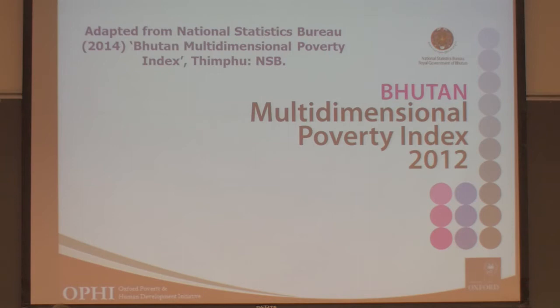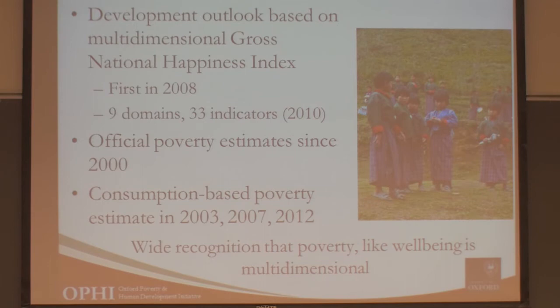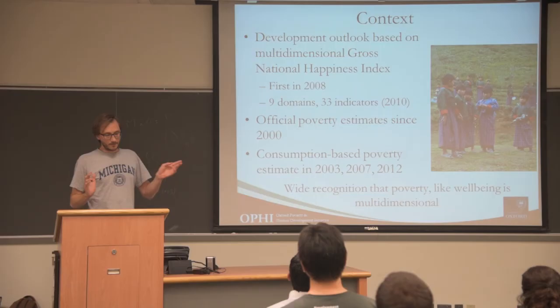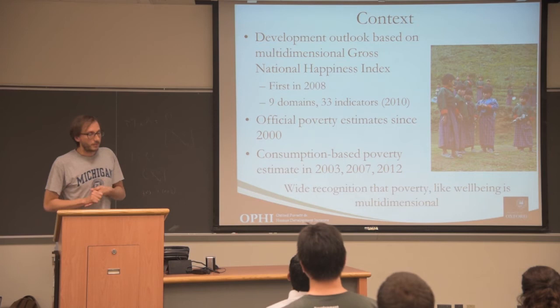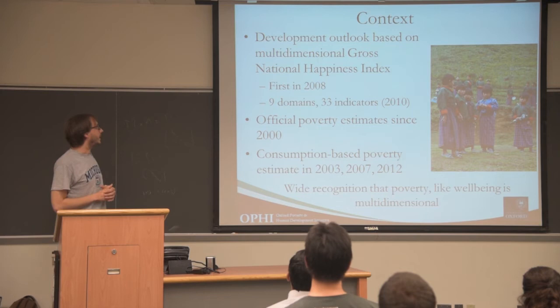Bhutan's Gross National Happiness index has, for example, nine domains and 33 indicators — including psychological well-being, health, education, and time use. Bhutan also has official poverty and income estimates, but there's wide recognition that poverty and well-being are multidimensional. Therefore, they also wanted a multidimensional poverty index. The MPI was designed as a tool to provide a better way of designing programs that deliberately target the poor and to monitor these programs.